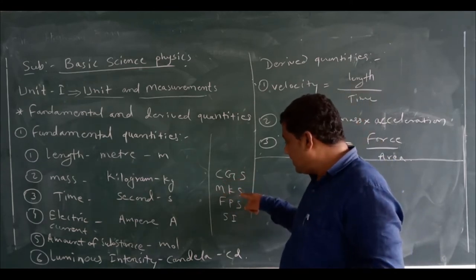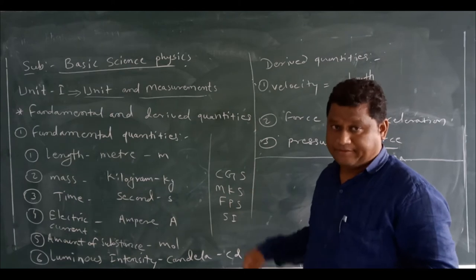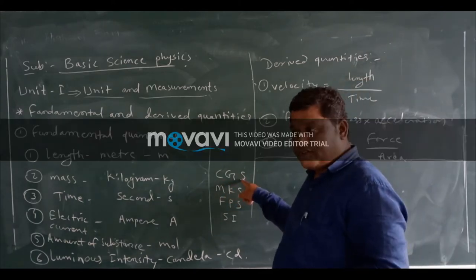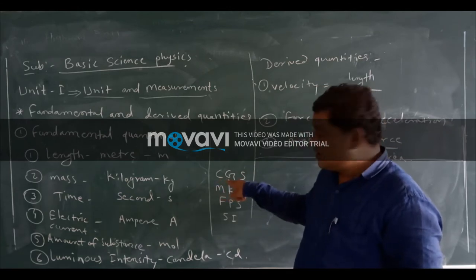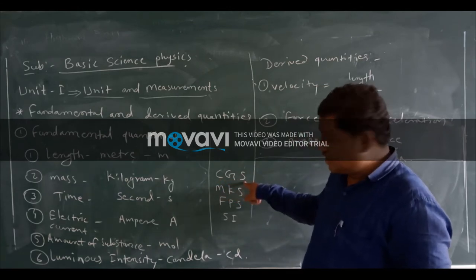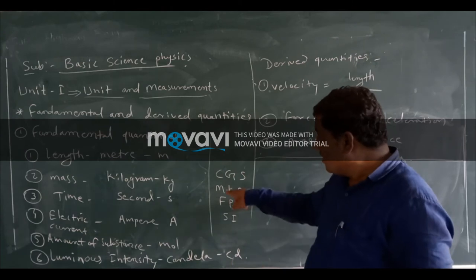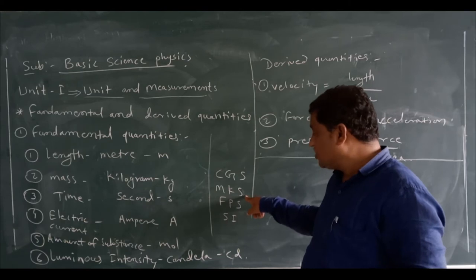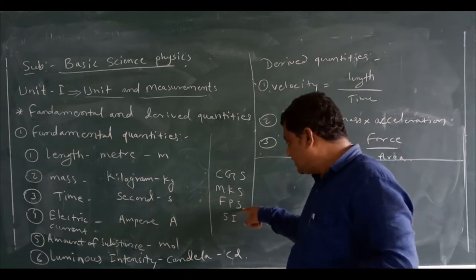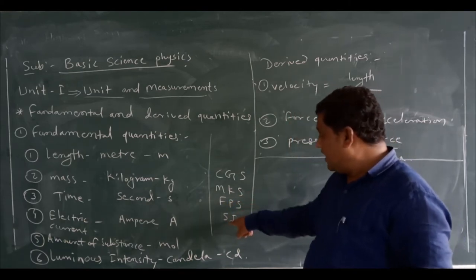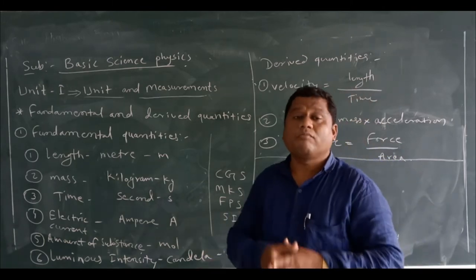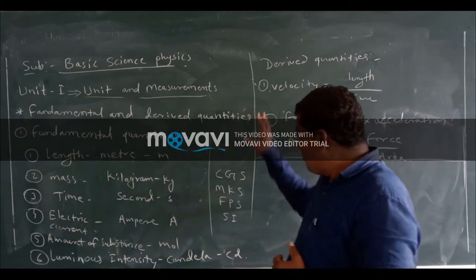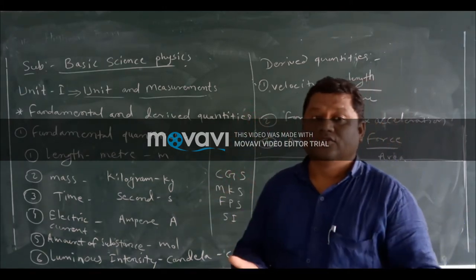CGS, MKS, FPS, and SI. SI is the short form of System of International unit. These are the main types of units.